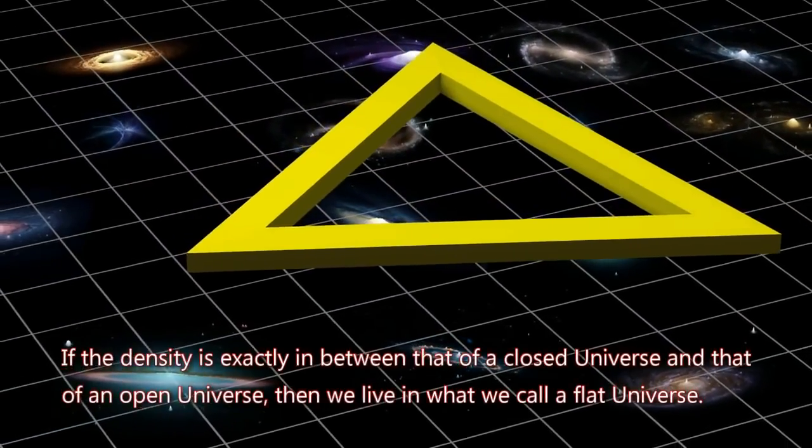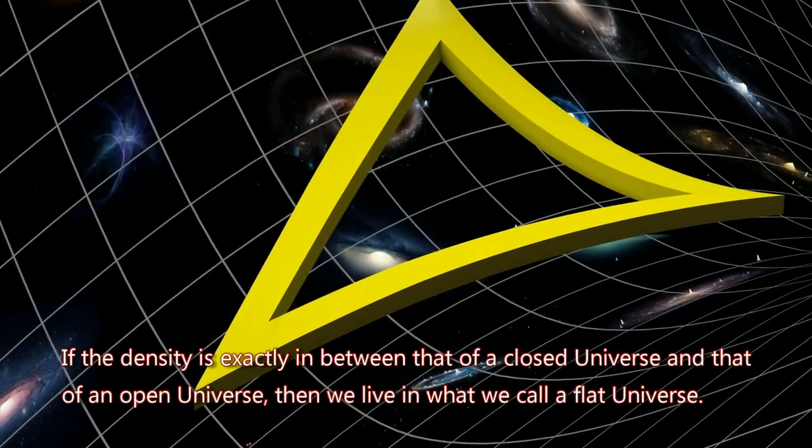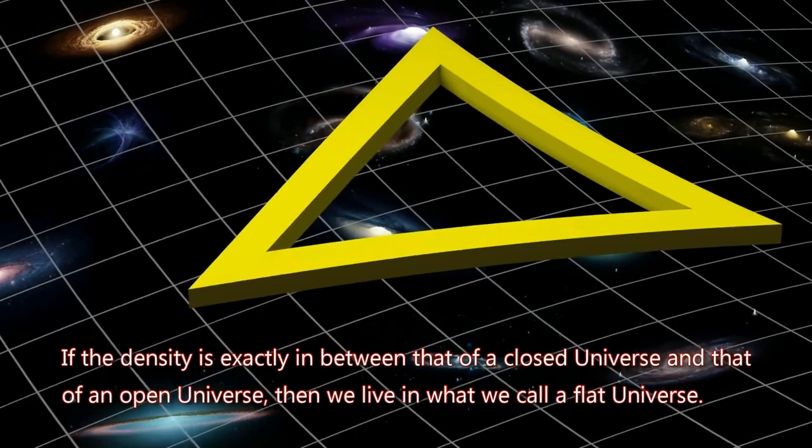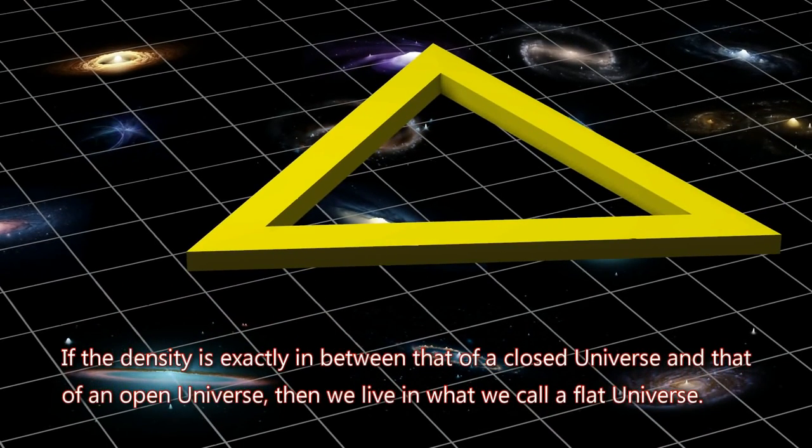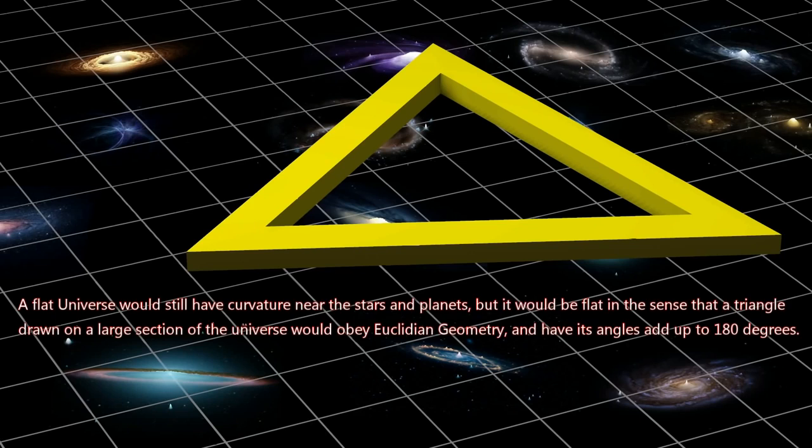If the density is exactly in between that of a closed universe and that of an open universe, then we live in what we call a flat universe. A flat universe would still have curvature near the stars and planets, but it would be flat in the sense that a triangle drawn on a large section of the universe would obey Euclidean geometry, and have its angles add up to 180 degrees.